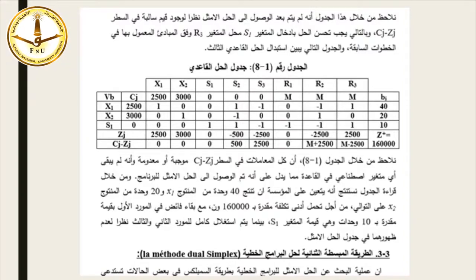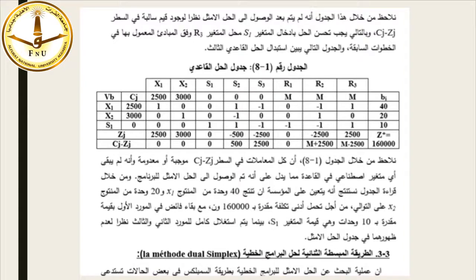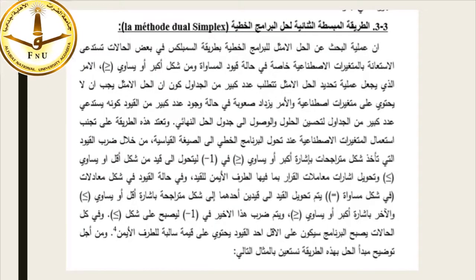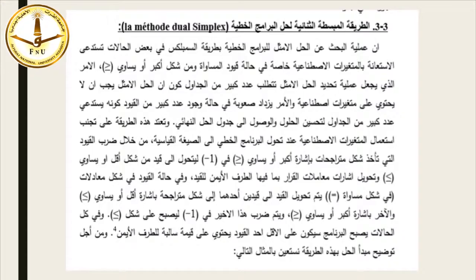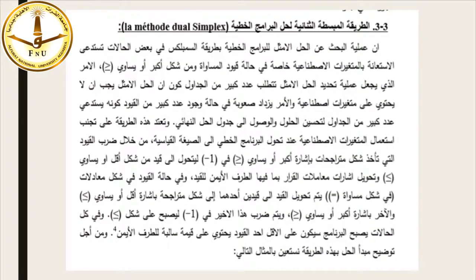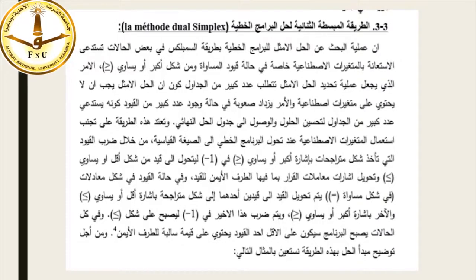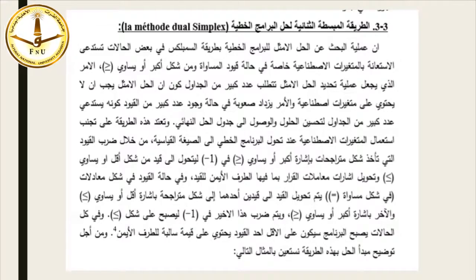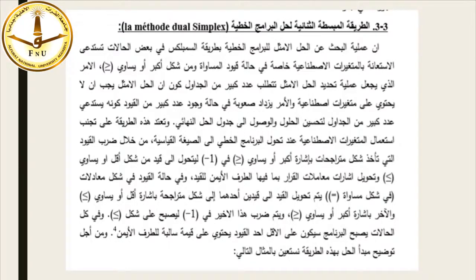الطريقة المبسطة الثنائية لحل البرمجة الخطية: إن عملية البحث عن الحل الأمثل للبرمجة الخطية بطريقة السيمبليكس في بعض الحالات تستدعي الاستعانة بالمتغيرات الاصطناعية، خاصة في حالة قيود المساواة ومن الشكل أكبر من أو يساوي، مما يجعل عملية تحديد الحل الأمثل تتطلب عدداً كبيراً من الجداول كون الحل الأمثل يجب ألا يحتوي على متغيرات اصطناعية.